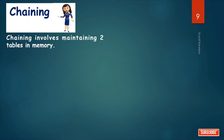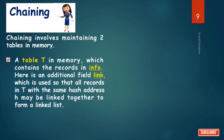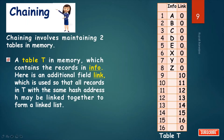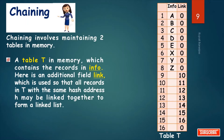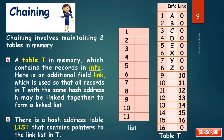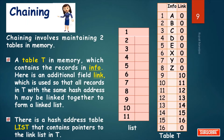Now we will learn chaining. Chaining involves maintaining two tables in memory: a table T in memory which contains the records in an info field, with an additional link field. All records in T with the same hash address may be linked together to form a linked list. There is also a hash address table called LIST that contains pointers to the linked lists in T.